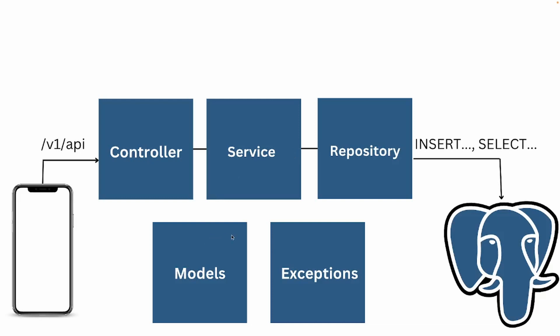I also added boxes for models and exceptions. Models is going to be used to create a structure on how you want the information to be stored into the database and how the information is going to look like when the data is retrieved. In this portion, we're going to create our to-do model so the database knows how it should expect information to be inserted and how it should look when we retrieve it. Then we'll also create our repository, which will be used to take our model and communicate with our Postgres container.